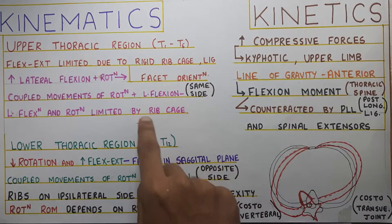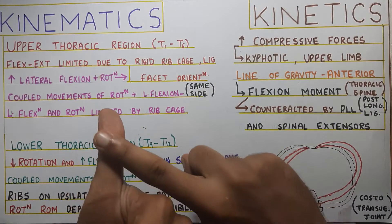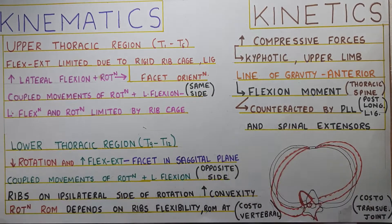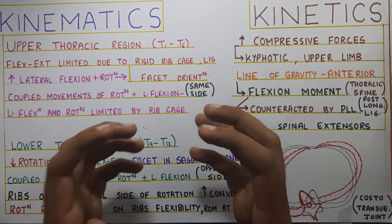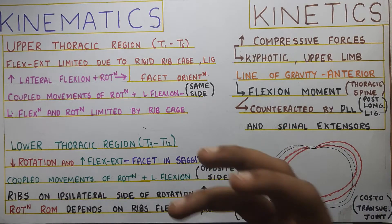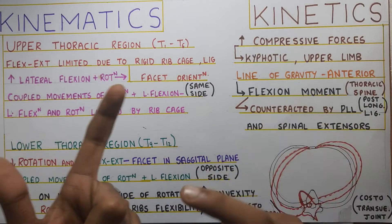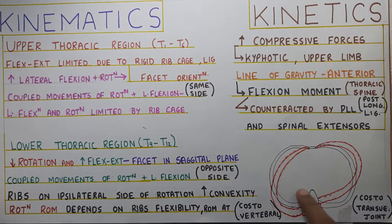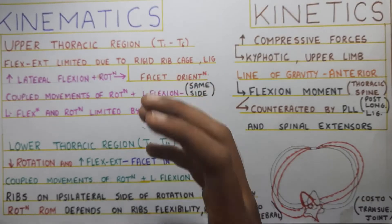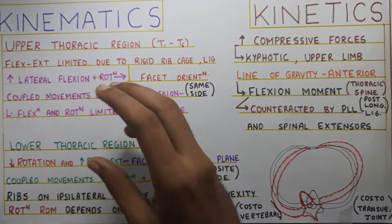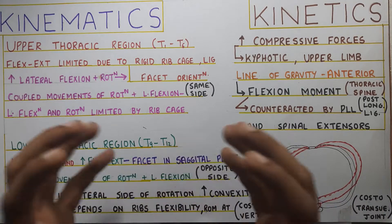Regarding ribcage mobility: in the thoracic region, the thoracic spine, ribs, and lungs are connected, and rib mobility has a direct influence on the mobility of the thoracic spine and the ability of the lungs to expand. So whenever working on thoracic spine mobility, you always need to work on breathing exercises to expand the lungs, rotation of the thoracic joint, and the mobility of the ribcage through expansion and breathing.